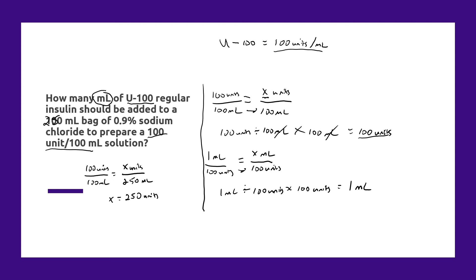And then, knowing that we need to convert this 250 units to milliliters, we set up another proportion. We're going to say how many milliliters of regular insulin does it take to get to 250 units when we know that the conversion is 1 mL per 100 units?